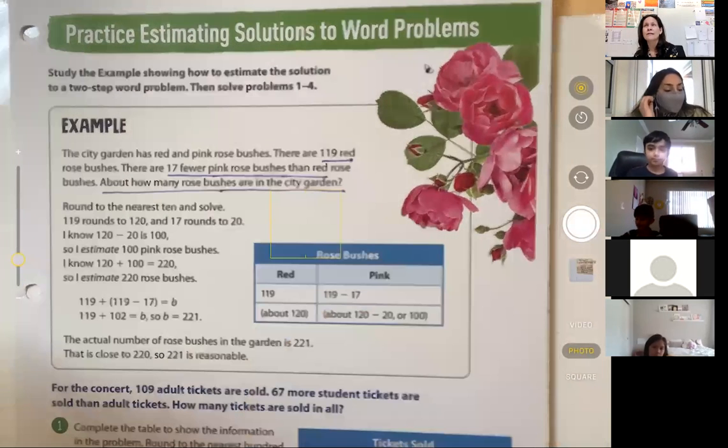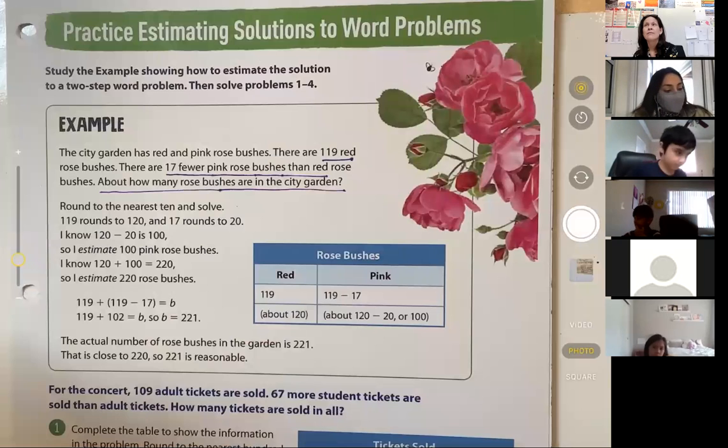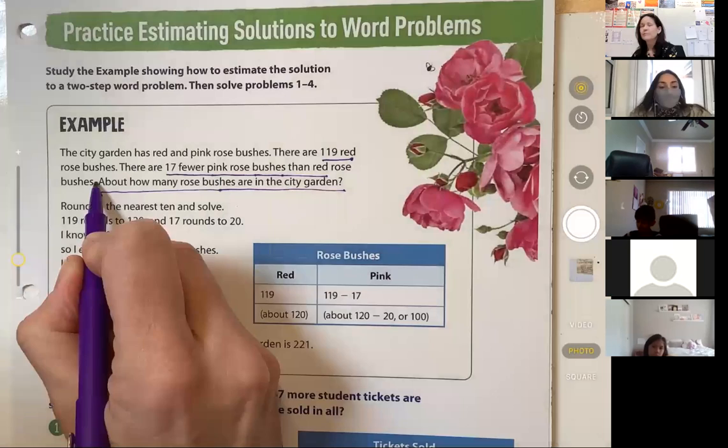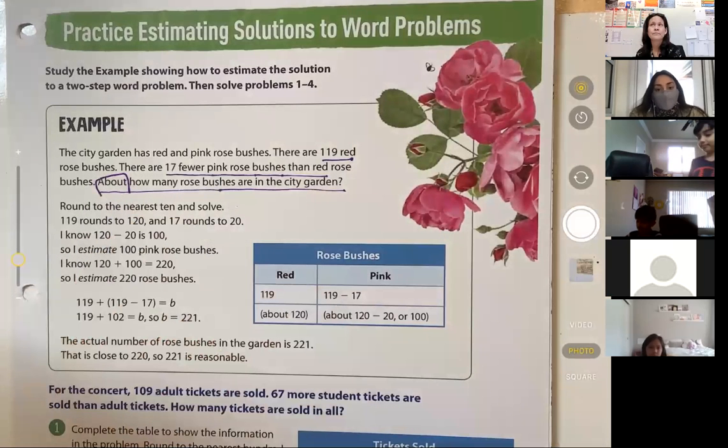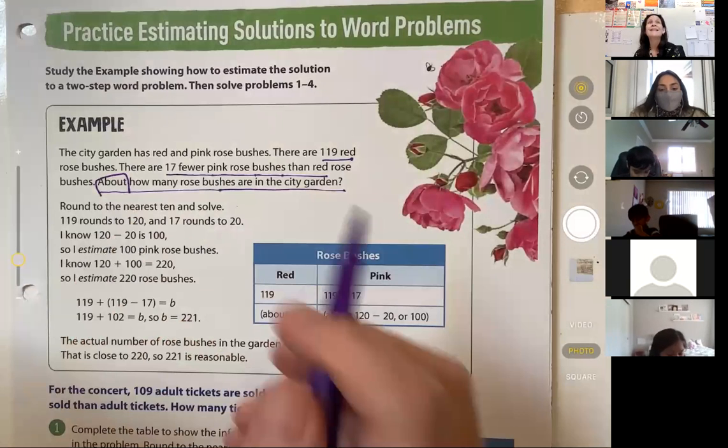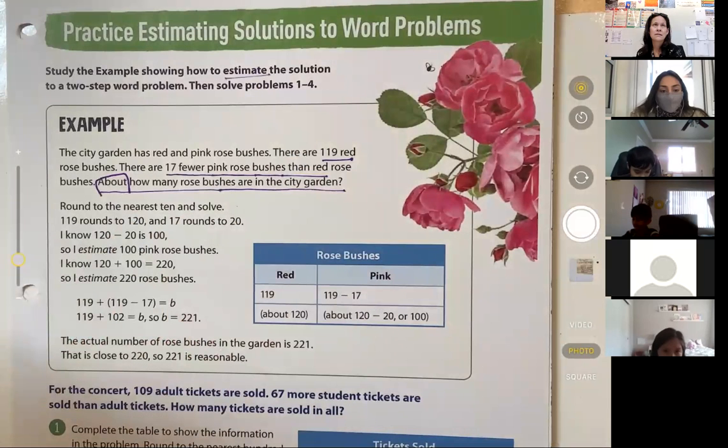Lots going on here, friends. The big question that we're asking you is right here. About. About. What does that mean? This means that we're going to be looking for an estimate. We're looking for an estimate.